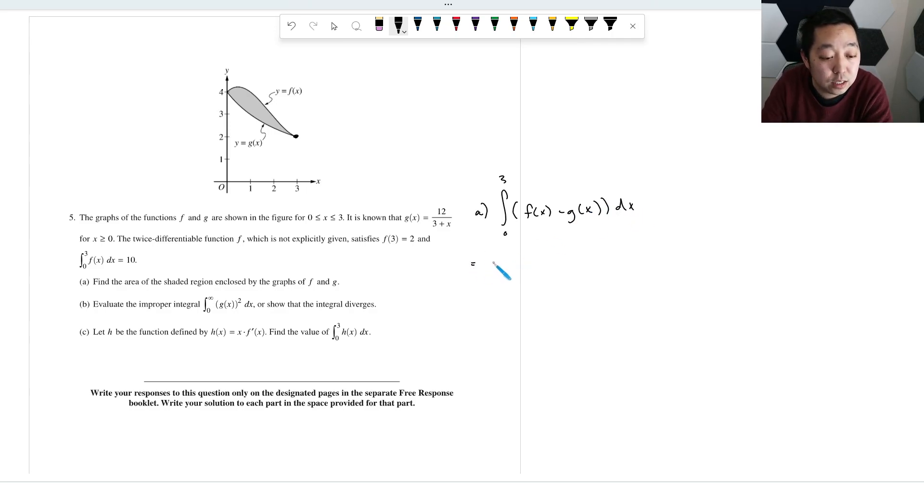So then that's going to be the integral zero to three. We just split it up into F of X DX minus the integral from zero to three of G of X, which is 12 over three plus X DX. This one here, they already told us that integral is 10. So that area is 10 right there.